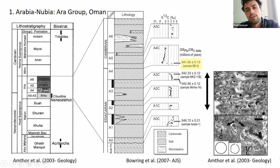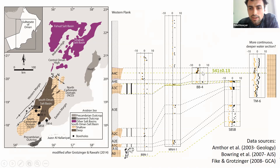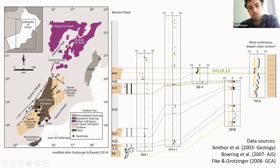We have an age of 541 Ma from a negative excursion interval in Oman. The oxygen isotopes are quite heavy — between minus 5 and 0 per mil — throughout this interval and we have halite and gypsum deposits within a restricted environment. The dynamic facies extends up to A1, A2, and A3C and stops at A3C; it's a more dynamic facies above that level in Oman.